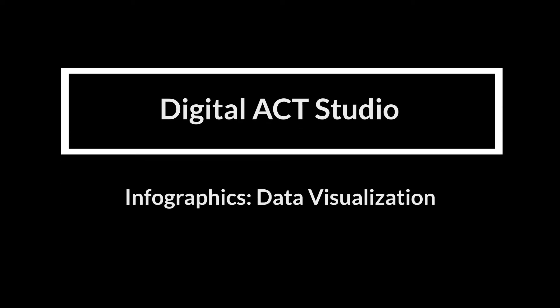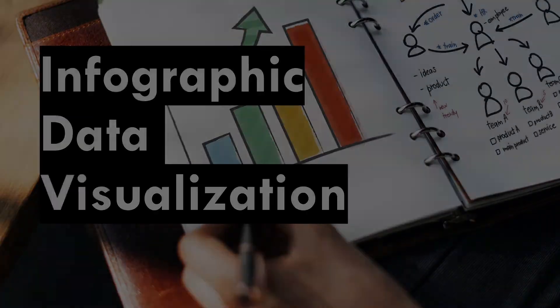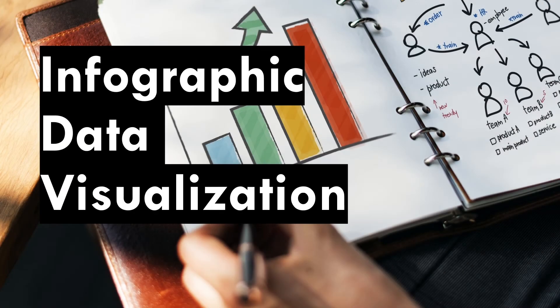You will find just about every type of data visualization on an infographic. At some point you'll find bar charts, pie charts, scatter plots, heat maps, and trend lines — they're all fair game for infographics. However, there are some particularly infographic-specific things that people do, and there are some key concepts to know about creating data visualizations for infographics.